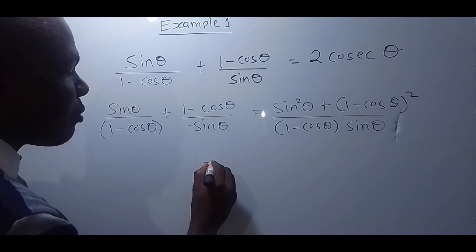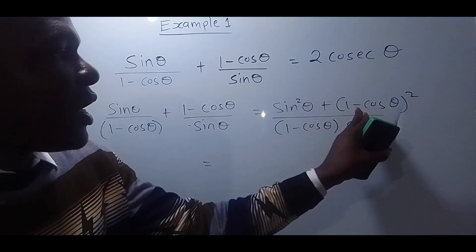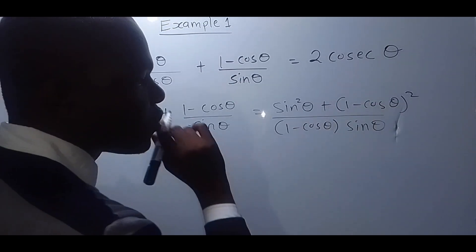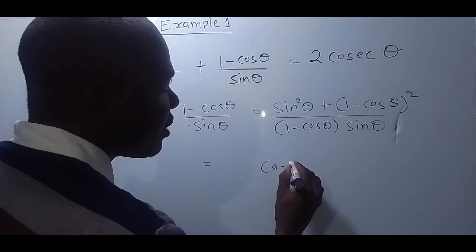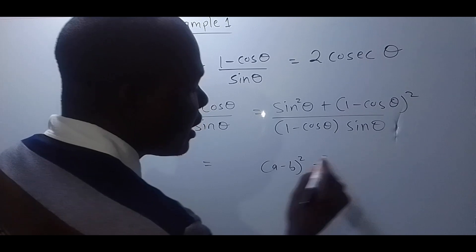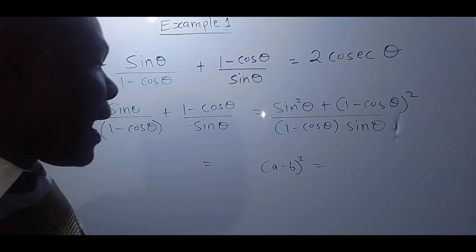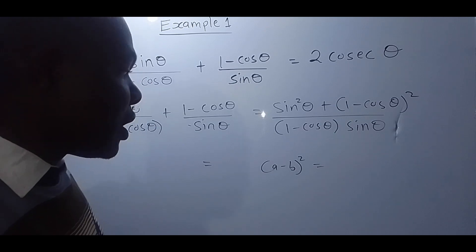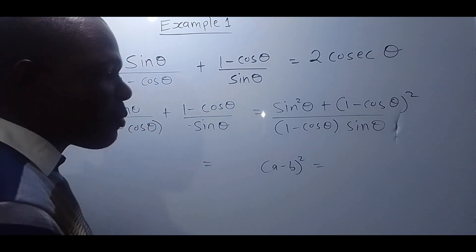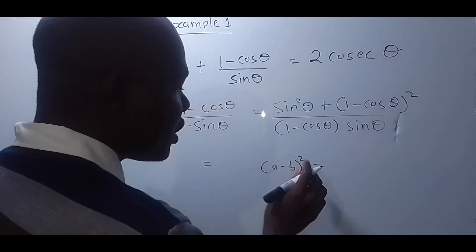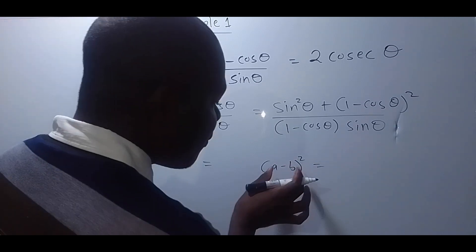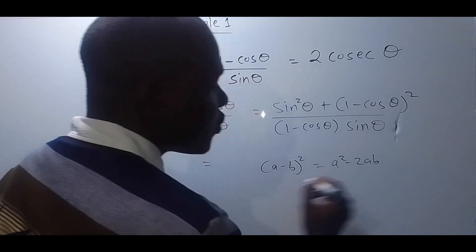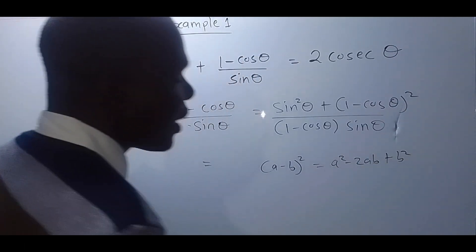The next step is to expand the bracket 1 minus cos theta squared. Remember, if you have A minus B squared, that is a quadratic identity equal to A squared minus 2AB plus B squared.